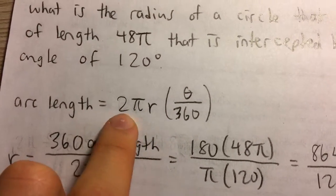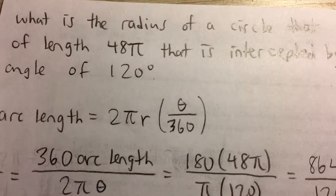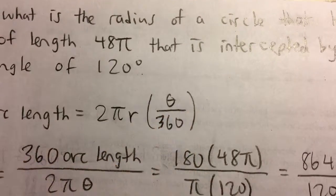So arc length is 2πr, r being the radius of the circle, times θ over 360, θ being the central angle.